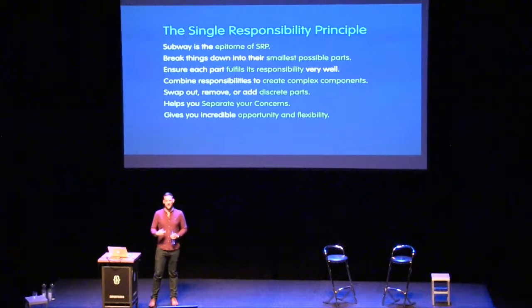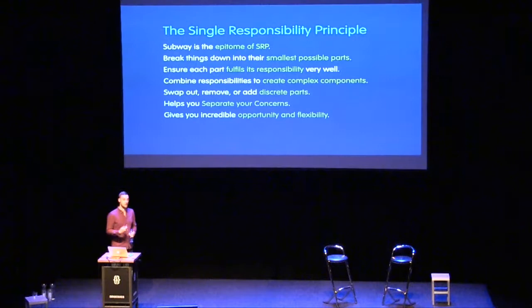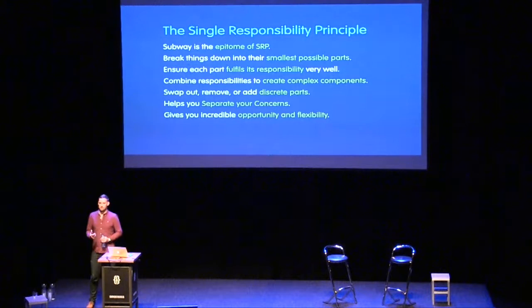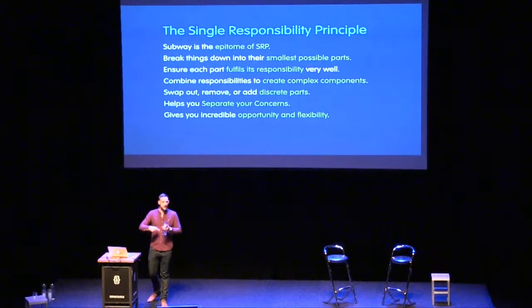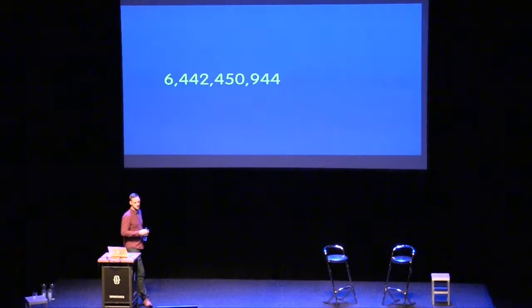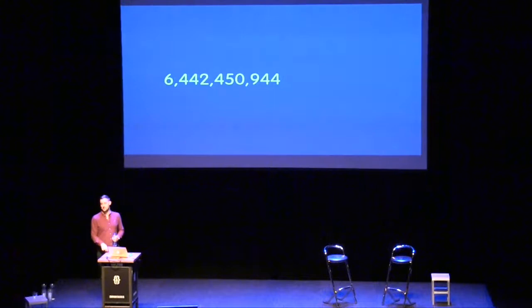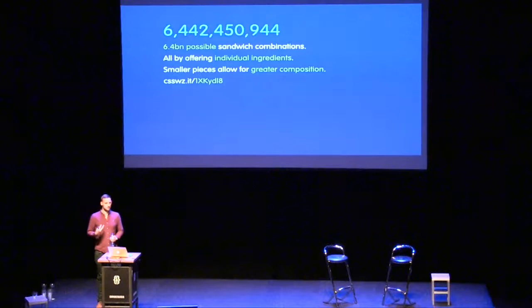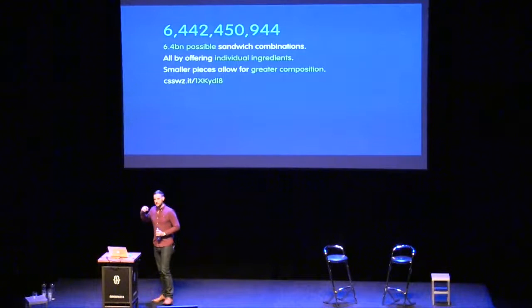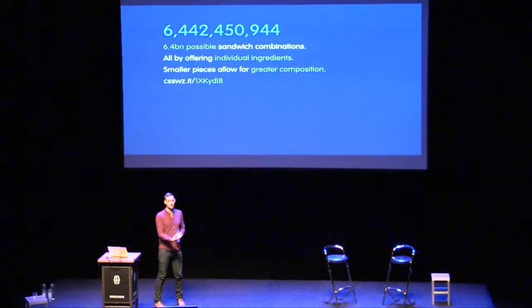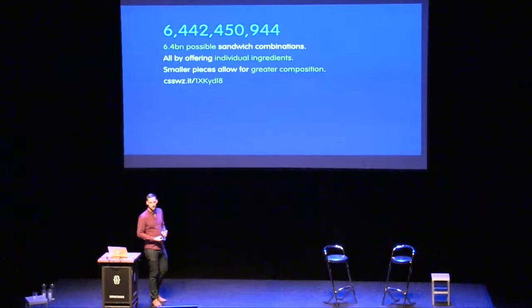For me, this is the epitome of Single Responsibility in the real world. We can make almost anything just by breaking it down into smaller, tinier ingredients. Every part of this system has only one job and it fulfills that job very well. This means we can swap things out, combine and compose things — we get a lot of flexibility. In fact, we can make 6,442,450,944 unique sandwiches at Subway — all of them taste identical, but it's true.